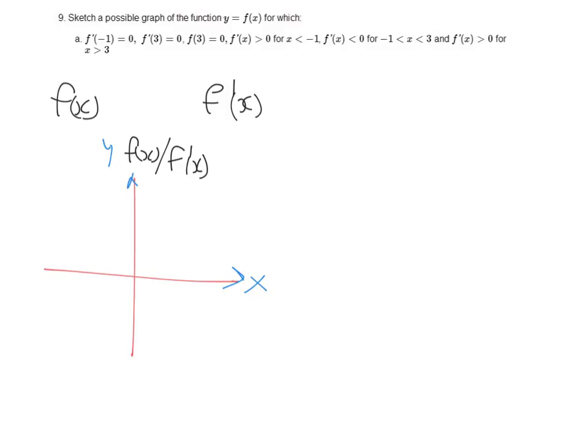We're having a look at this, so it says that f dash negative 1 equals 0, so that tells us that the derivative f dash of x is 0 at x equals negative 1. So, that tells me that the derivative, and we're going to do derivative in blue, at negative 1 is at 0. It also tells us that when x equals 3, the derivative equals 0. So, at 3, it equals 0.